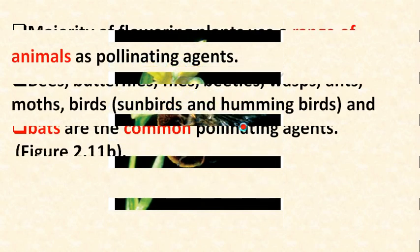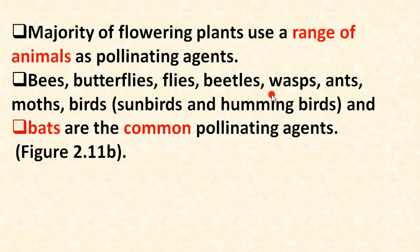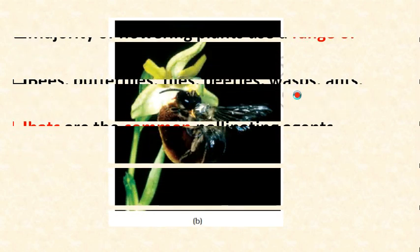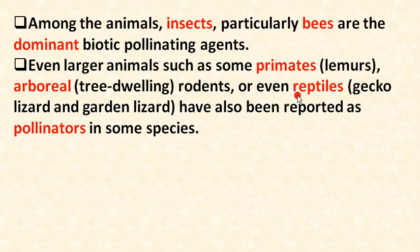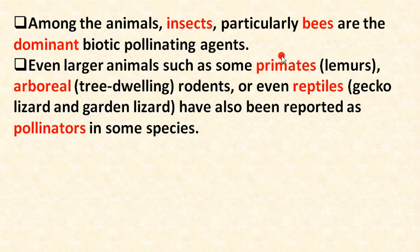Among animals, insects — particularly bees — are the dominant biotic pollinating agents. That means the majority of biotic pollination is carried out by bees.